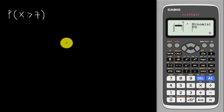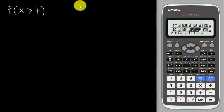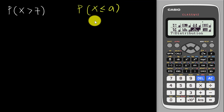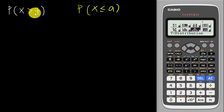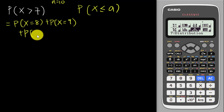This example looks easy, but remember the calculator preset is always 'less than or equal to'. In this case the sign is 'greater than'. For P(X > 7) with n = 10, manually you would need to compute P(X=8) + P(X=9) + P(X=10).